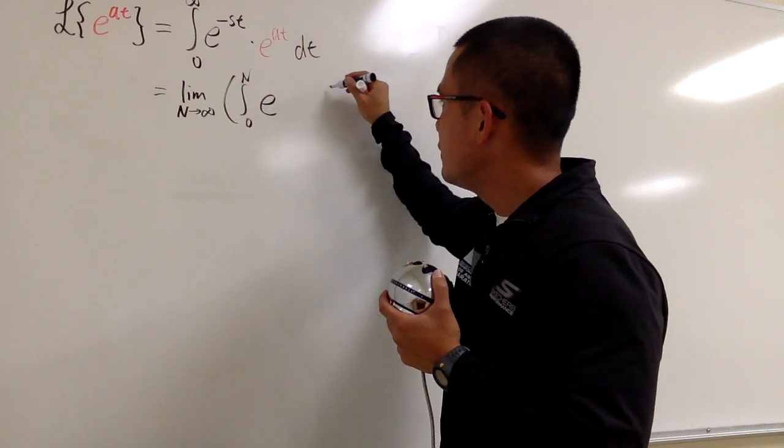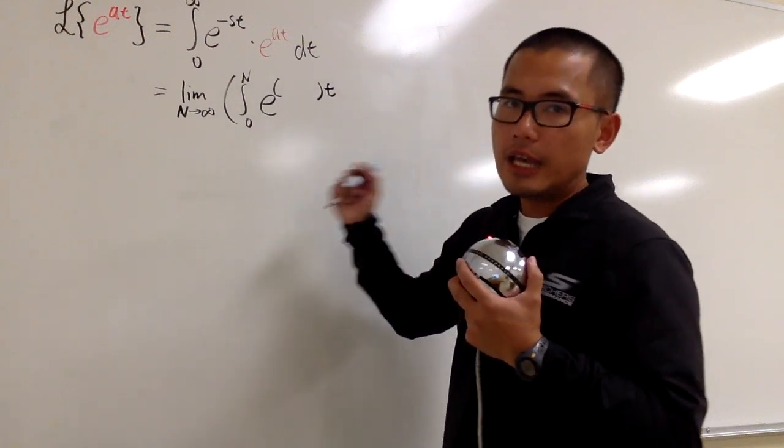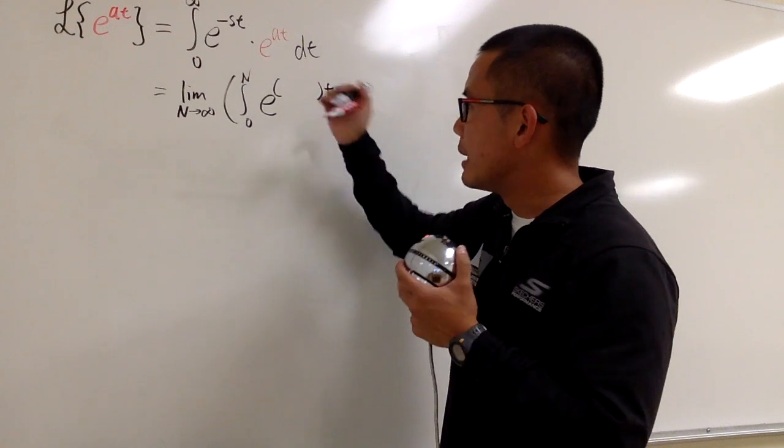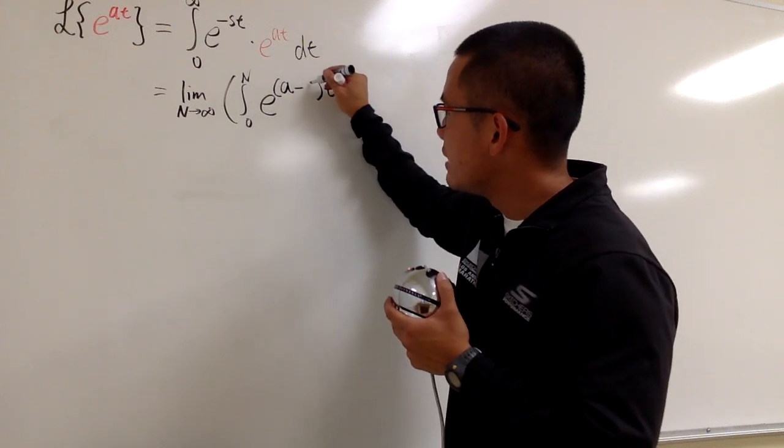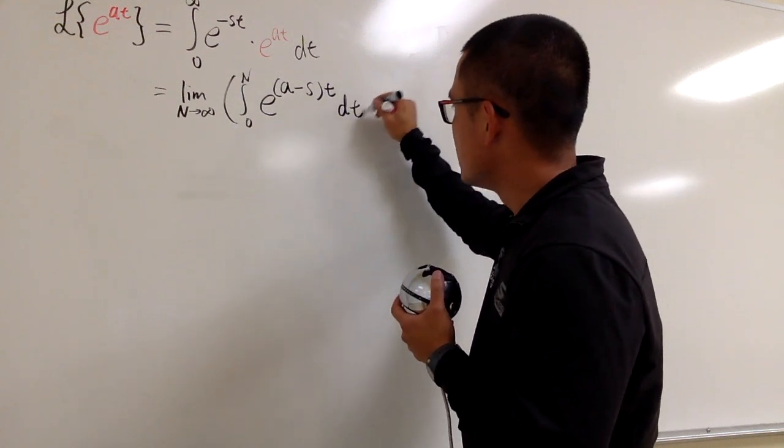Since they all have t, let me factor the t and put it at the end. We will have negative s plus a inside here, but let me write it down as a minus s. So this is what we have, and of course we still have the dt.